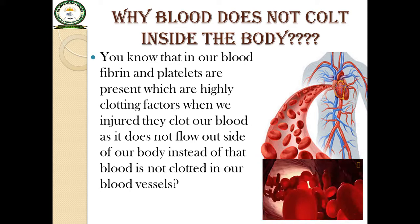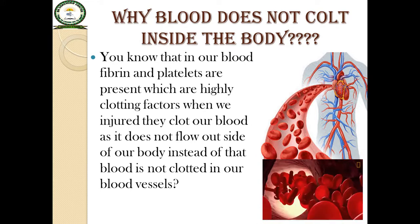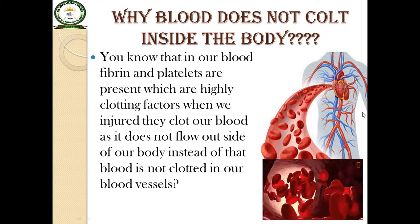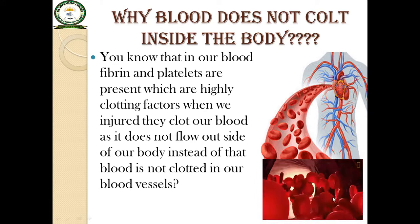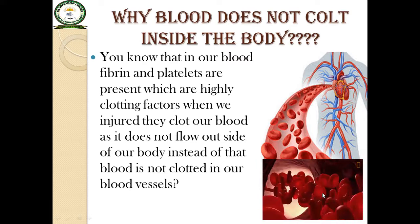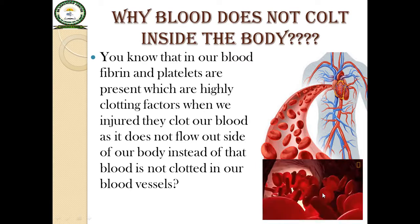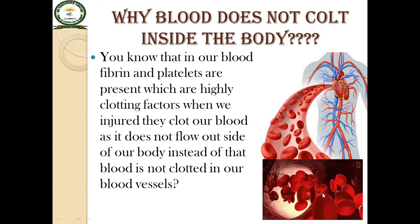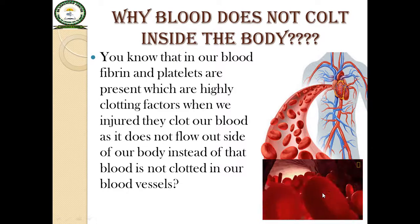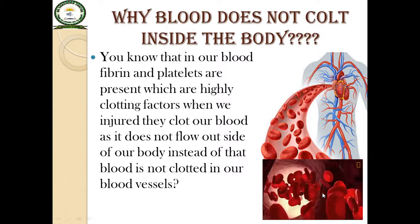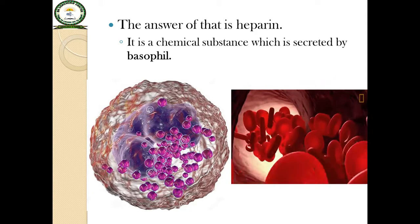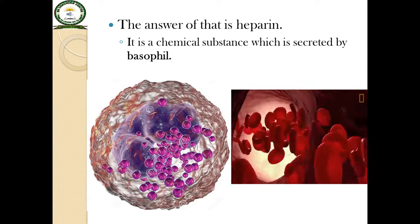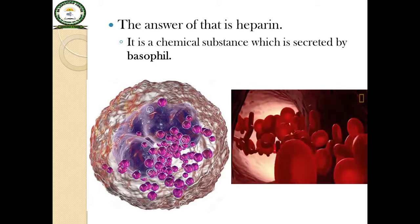So what are the factors involved in the blood which are preventing the blood from clotting? Look at this diagram — here blood is flowing and blood is not clotting in the vessels. So what type of anti-coagulant factors are present in the blood vessels or blood? The answer is heparin. Heparin is a chemical substance which is secreted by the basophil.